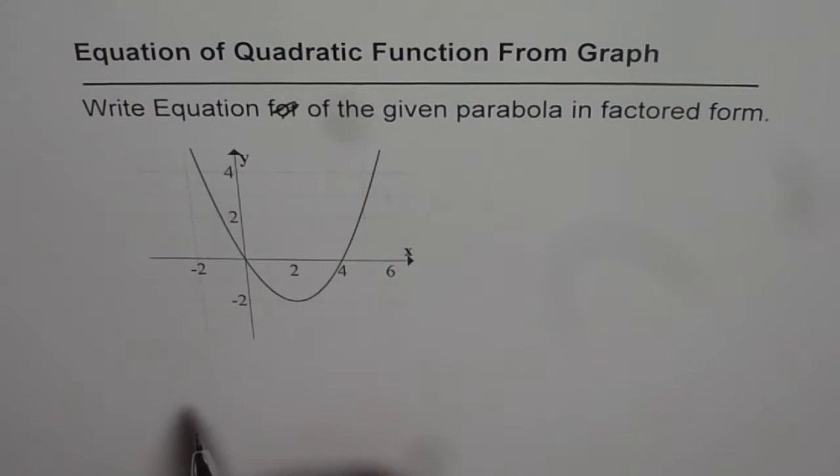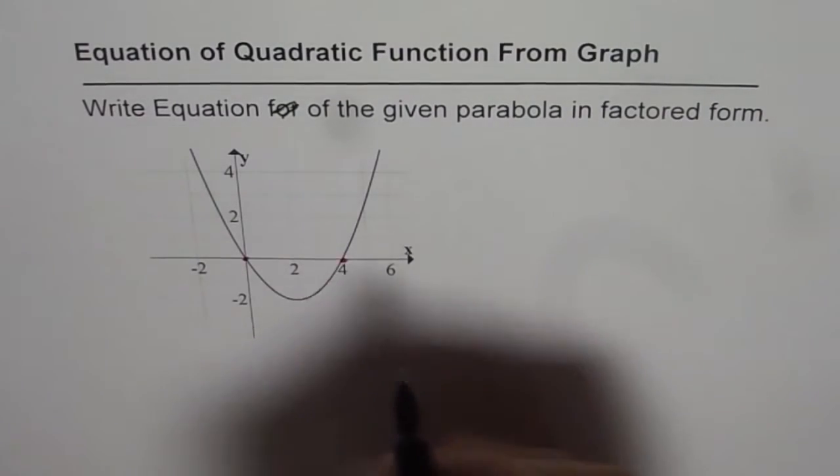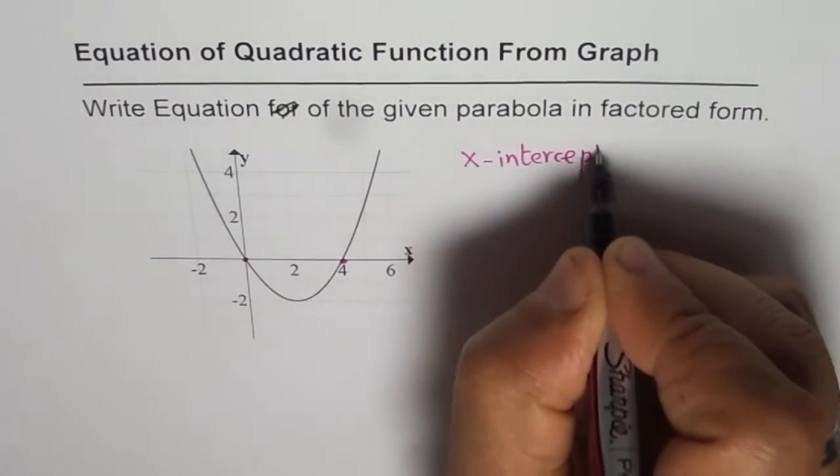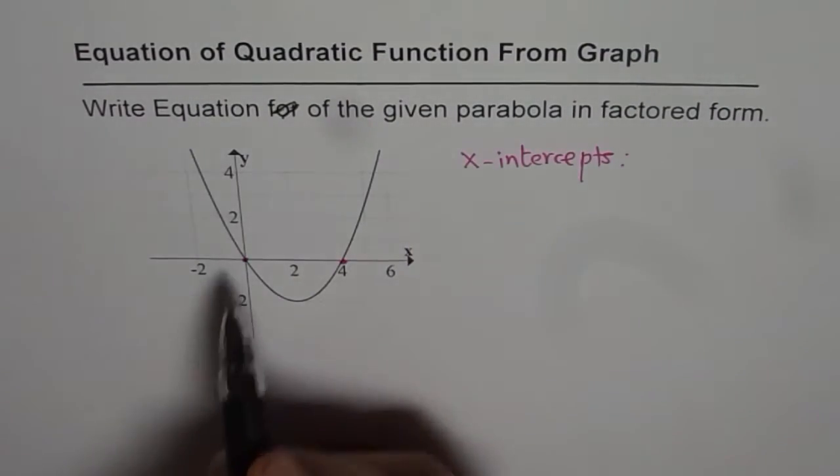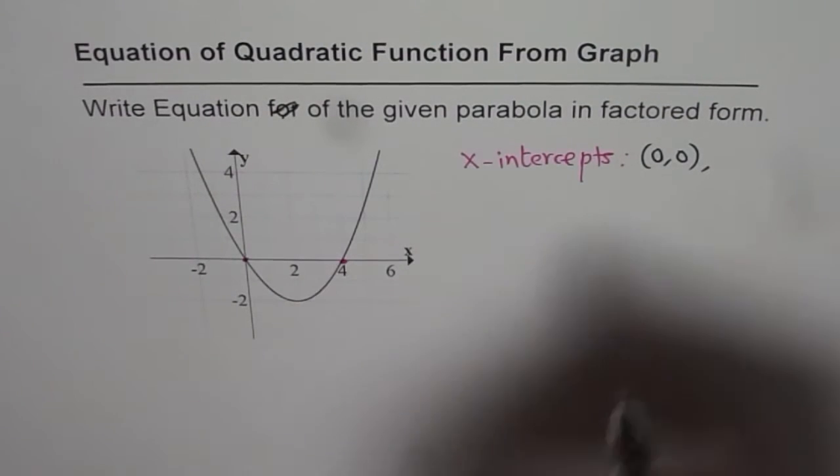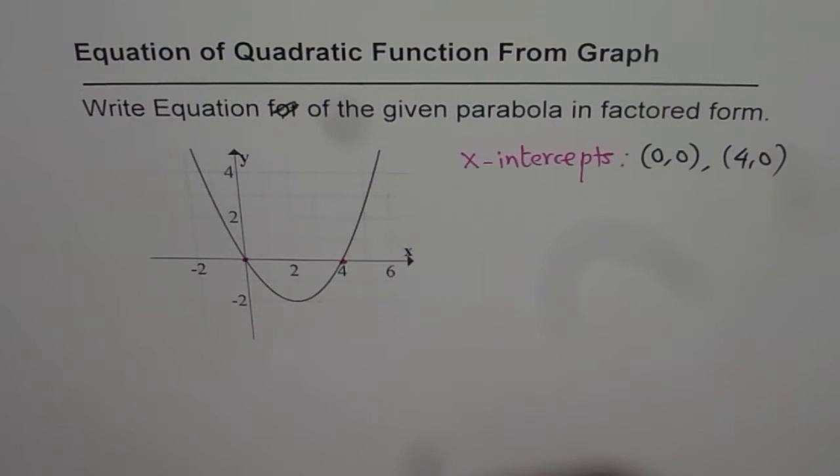Now since we are given the x-intercepts it is easy to write equation in factored form. Let's identify the x-intercepts. The two x-intercepts are at, let's write down these points. The points are origin which is (0,0) right and the other one is at 4 that means (4,0). So these are the two x-intercepts.